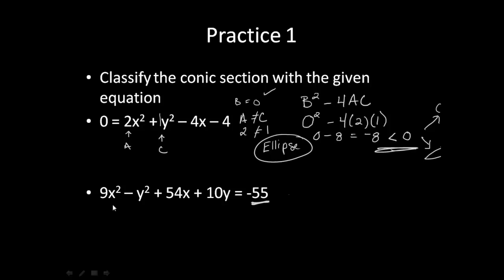All right. Hopefully, you would have rewritten it as 9x squared minus y squared plus 54x plus 10y plus 55 is equal to zero. Then, when you do your b squared minus 4ac, b comes from your xy term, so we don't have one. It is zero.